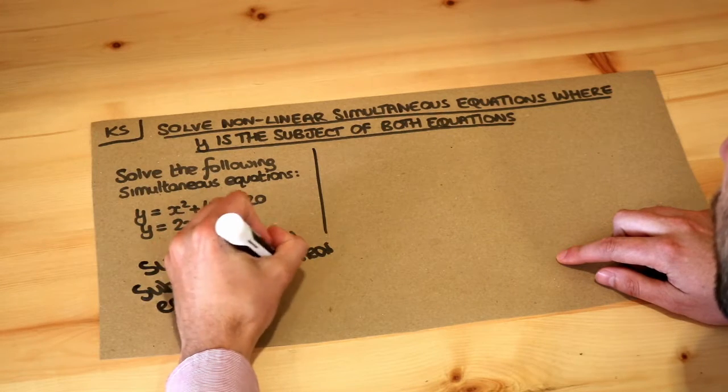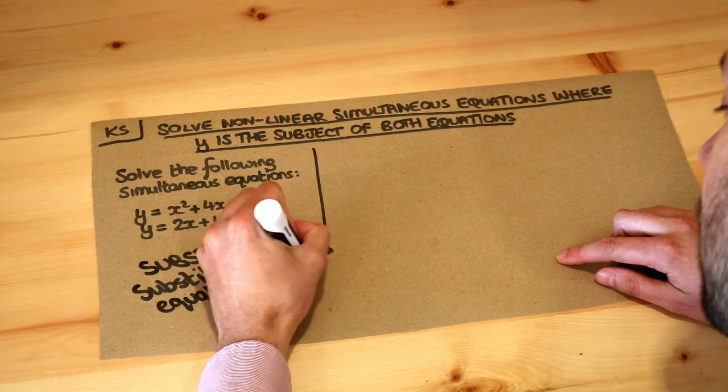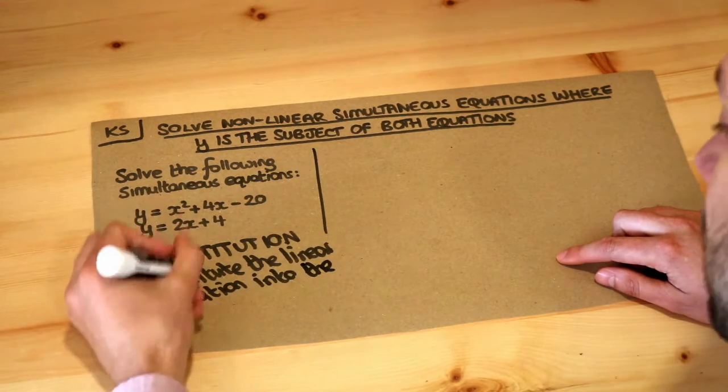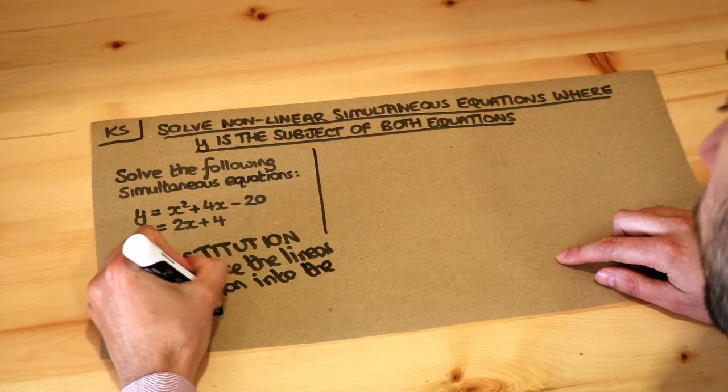Specifically, usually you would substitute the linear equation - so that's the equation without any squares in it, that bottom one - into the quadratic one, so the quadratic equation is the one with the x squared in it or y squared maybe.